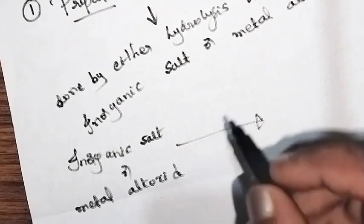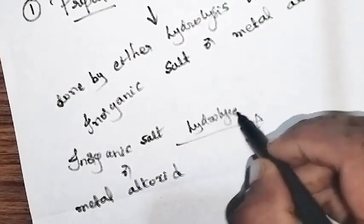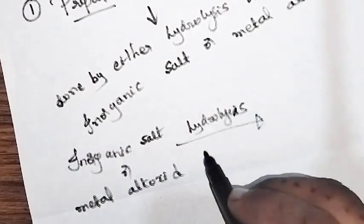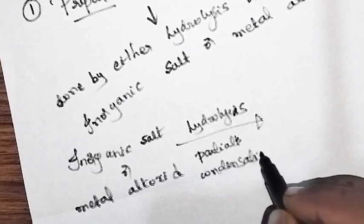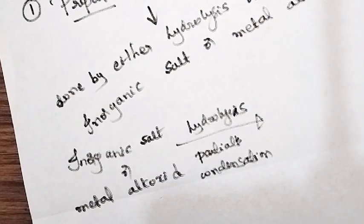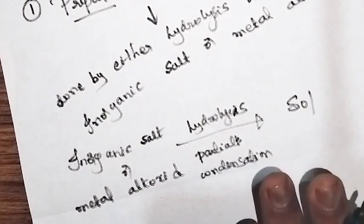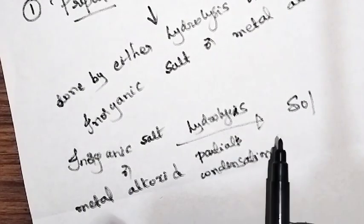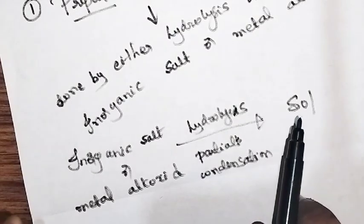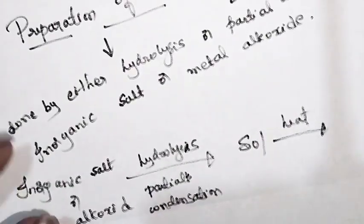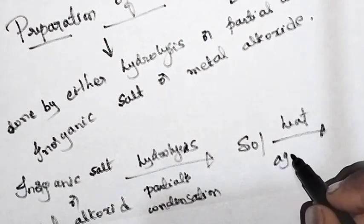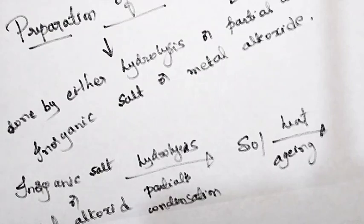Inorganic salt or metal alkoxide is your starting material, also called the precursor. What you need to do is either hydrolyze it or partially condense it, and you will end up with the sol. This is the first step. Once you get the sol, you can either heat it or keep it as such for several days — that process is called aging.